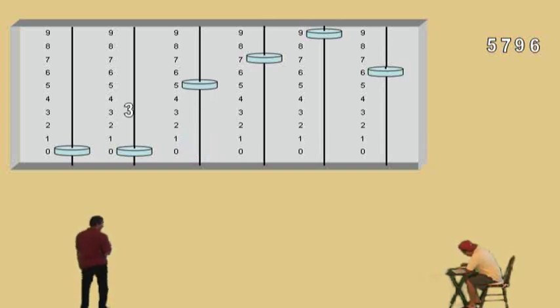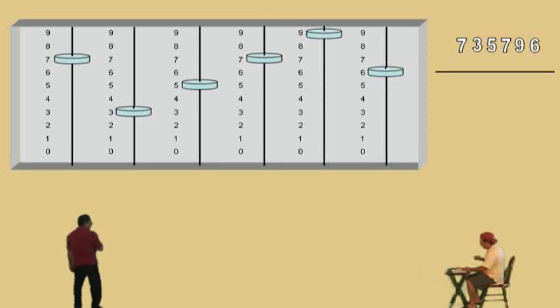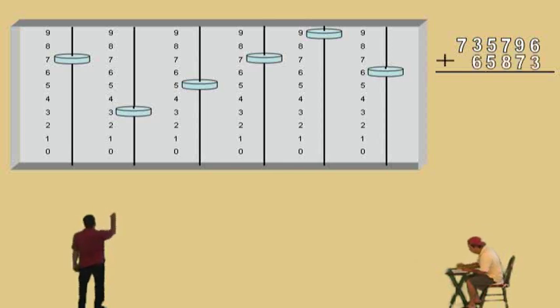Our next digit is a 3. That's in the 10,000s column. There we go, we'll enter that one. Now what we're going to do, we're going to add this number to our entered number of 735,796. And that is 65,873, that's what we're going to add.